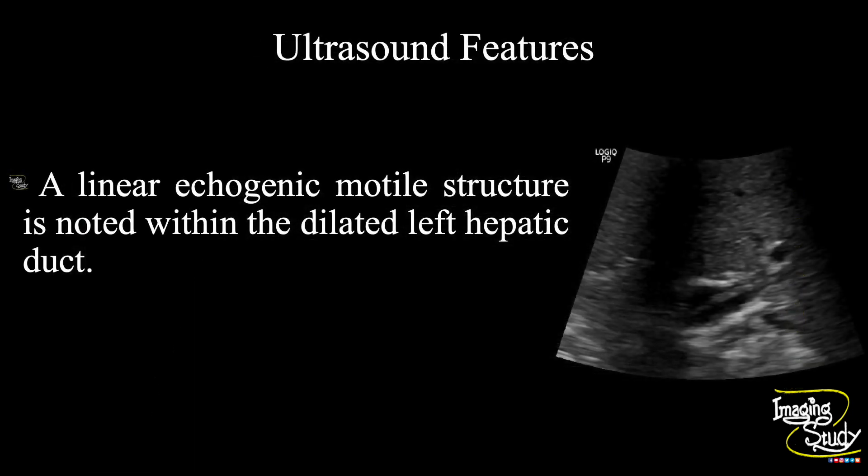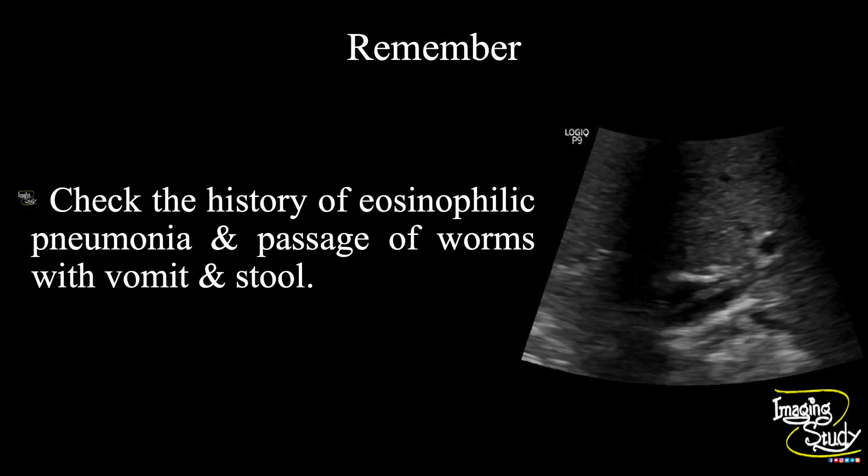In summary, a linear echogenic motile structure is noted within the dilated left hepatic duct indicating biliary ascaris. Take-home message: check the history of pneumonia and passage of worms with vomit and stool. As we know from the life cycle of Ascaris lumbricoides, this patient will have eosinophilic pneumonia, and then the patient will come to you with gastrointestinal complaints.